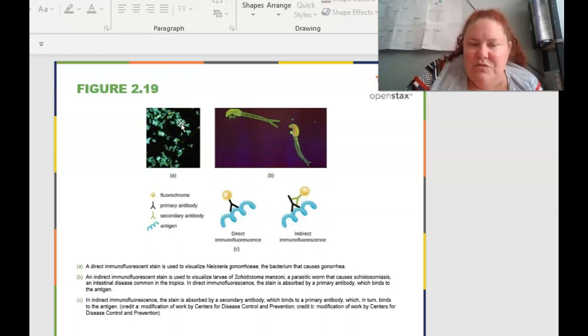Looking at these guys, again, we're using immunofluorescence, so you can use a fluorescent tag on an antibody. And this is actually staining gonorrhea. So Neisseria gonorrhoeae, the microbe that causes gonorrhea. And then an indirect immunofluorescent stain is used to visualize the larva of Schistosoma mansoni, which is a parasitic worm that causes schistosomiasis, I butcher words, guys. And this would be an intestinal disease. And then you can also use direct or indirect. So direct would be the antibody is going to stain directly onto the organisms. Where indirect, you're going to be binding to the antigen and then the antibody. So we can use a lot of different things to visualize what we need to see.